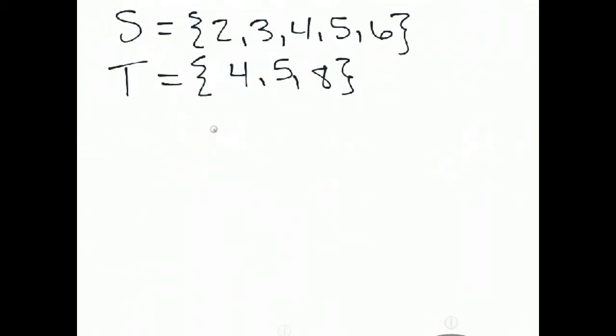There are some operations we can perform when dealing with sets. Let's say we have two sets. S being the one we just talked about, 2, 3, 4, 5, 6. And a new set T, just the numbers 4, 5, and 8. We're going to take the union of the two sets. We denote that with a big U in between them. The union is everything in both sets.